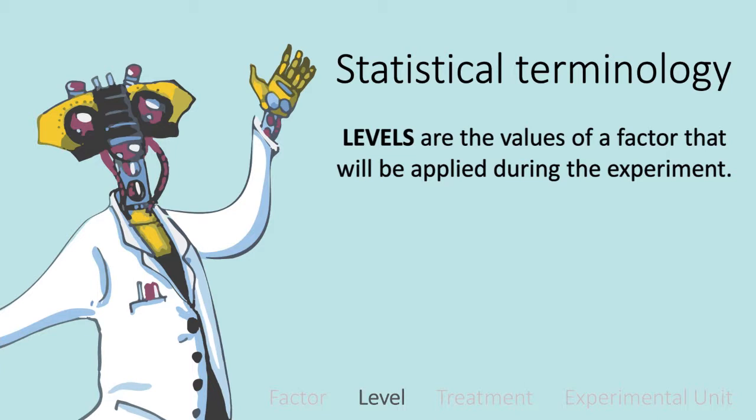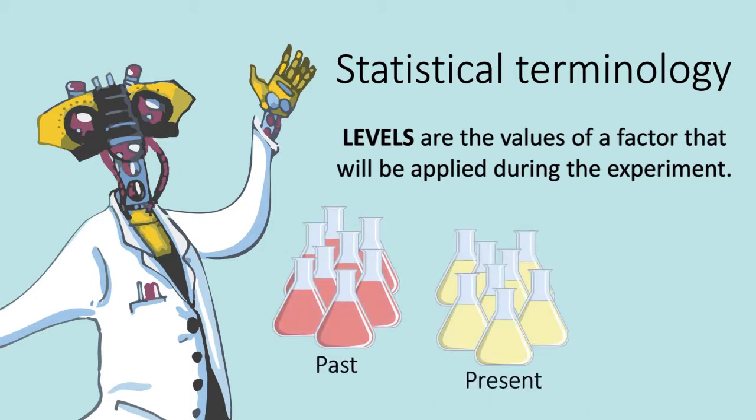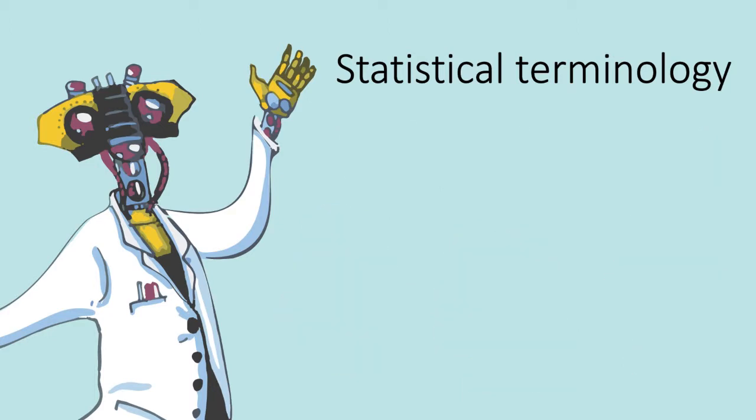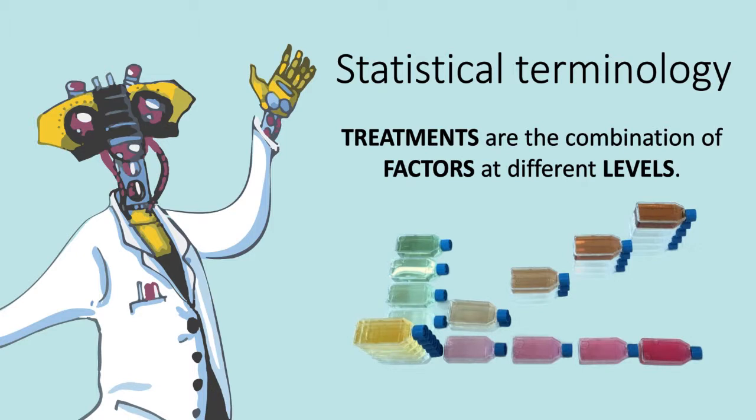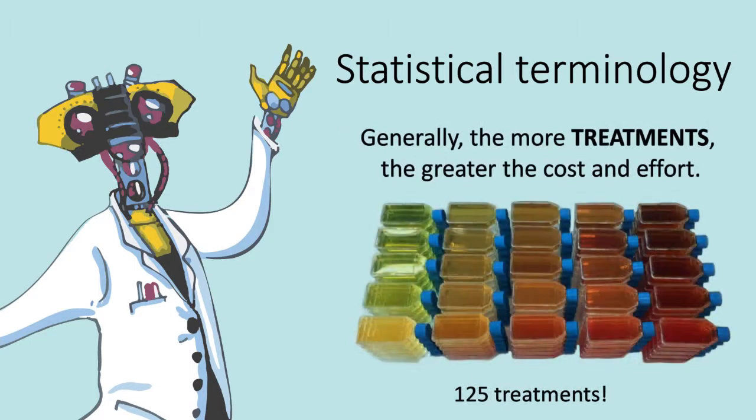Levels are the values of a factor that will be applied during an experiment. For example pCO2 might be set to past, present and future levels. Treatments are the combination of factors at different levels that we actually apply during the experiment. For example when John presented his major vectors scenario every culture flask represents a treatment. The number of treatments you have will play a big part in how much effort or cost your experiment takes. So if you're going to do an experiment with a lot of treatments you want to make sure you have a good reason why.